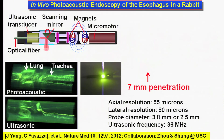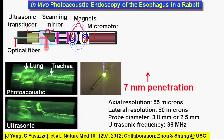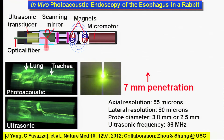While standard optical endoscopy images only the surface of the esophagus or colon, photoacoustic endoscopy images up to 7 millimeters of depth, enabling detection of deeper lesions.